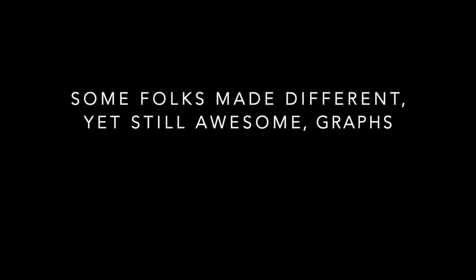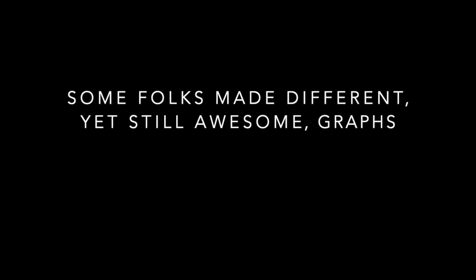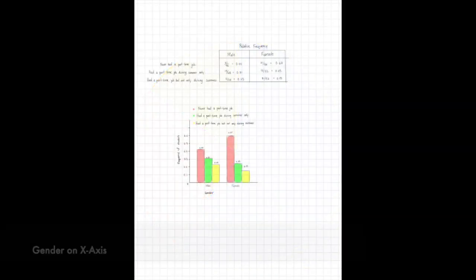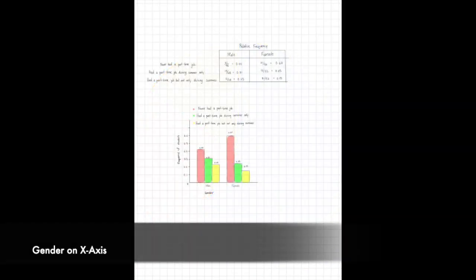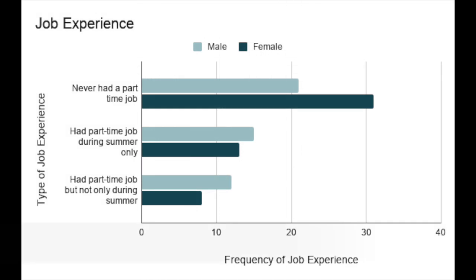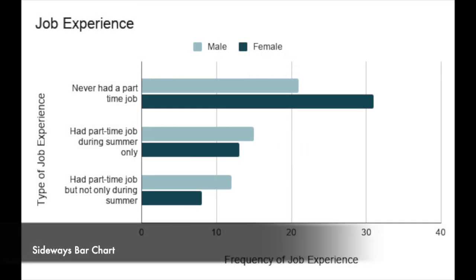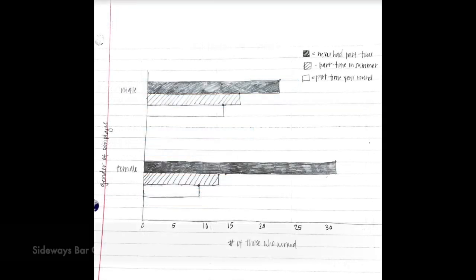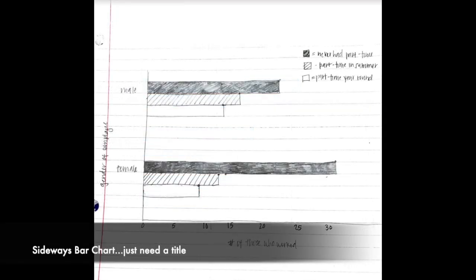I had a few folks make different looking graphs — I wanted to share some. A couple folks made pie charts. I had somebody use relative frequencies but put gender on the X axis, and that was awesome. I had a couple folks do sideways bar charts, and they're looking great. My only comment would be: just give me a title.